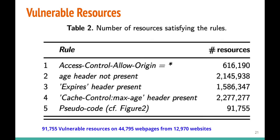We performed analysis on these resources to determine how many were vulnerable to our attack. This table presents resources following specific rules — for example, about 600,000 resources had Access-Control-Allow-Origin set to star. Using our algorithm, we found about 91,000 resources were vulnerable. Notably, about 1.5 million resources had the Expires header, showing the extent of its usage even though it has been deprecated and replaced by the Cache-Control max-age directive.